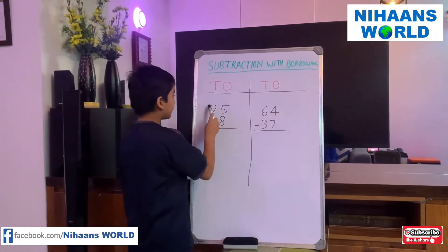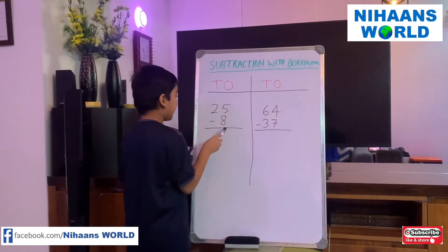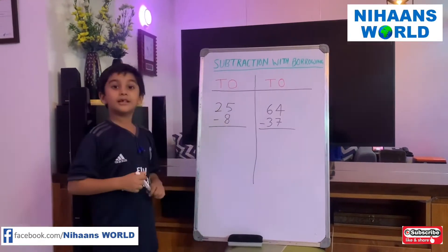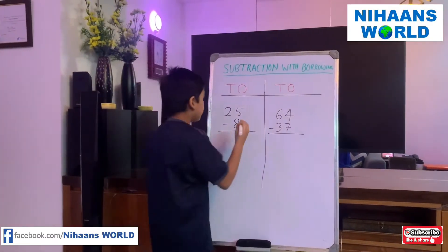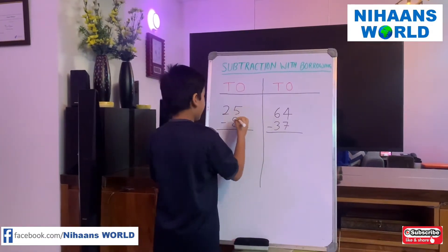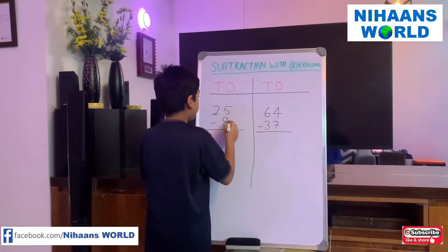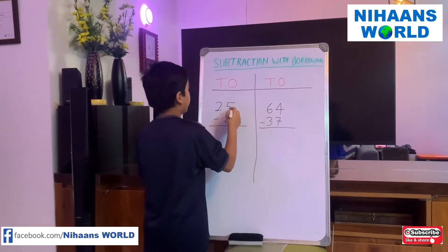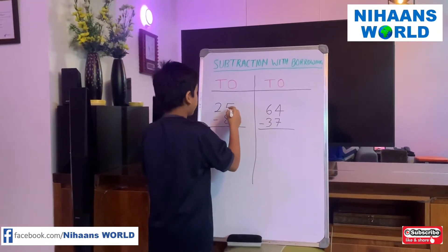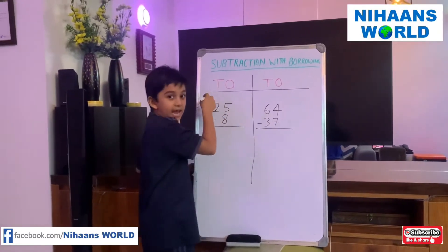The first number is 25 minus 8. Let's subtract it. We cannot subtract 8 from 5, so we have to borrow from 10.